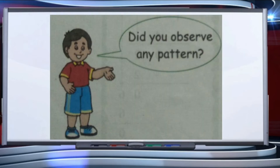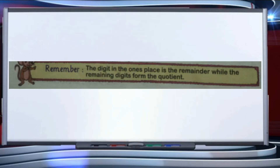Did you observe any pattern? Yes, the pattern is: if we divide a number by 10, then the digit in the ones place is the remainder, while the remaining digits form the quotient. The ones place digit will be the remainder, whereas the other remaining digits — whether there are one, two, or three — form the quotient.